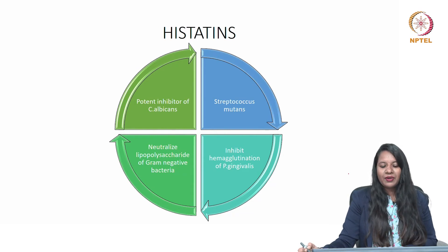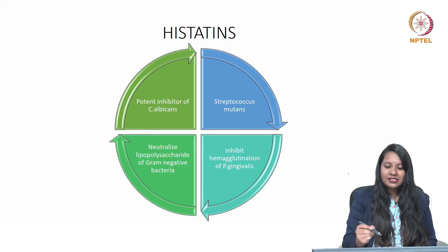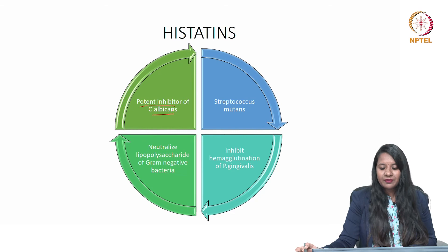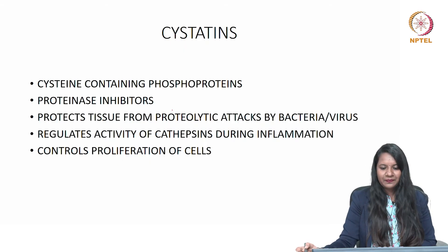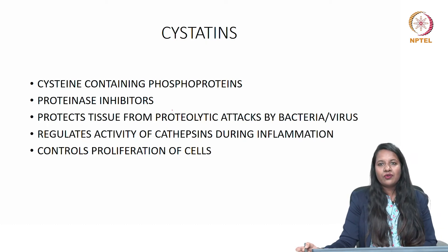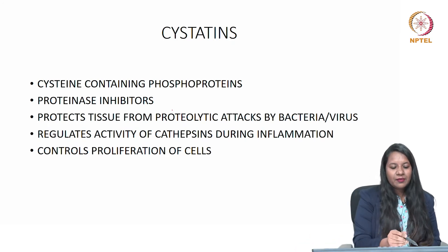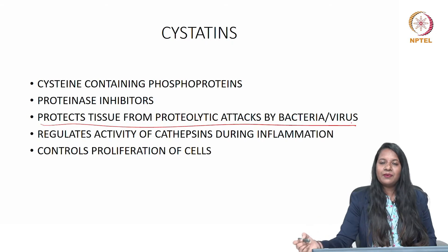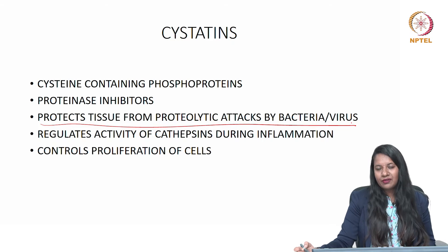Histatins neutralize the lipopolysaccharide of gram-negative bacteria. They are potent inhibitors of Candida albicans and also inhibit hemagglutination of P. gingivalis. Cystatins are cysteine-containing phosphoproteins, also called protease inhibitors, that inhibit or protect tissues from proteolytic attacks by bacteria or viruses. They regulate the activity of cathepsins during inflammation and also control cellular proliferation.